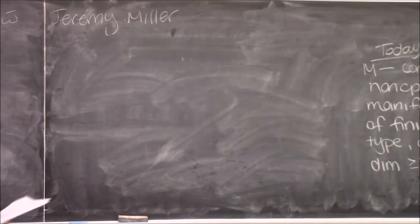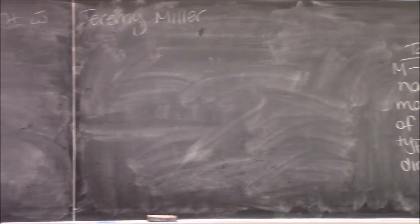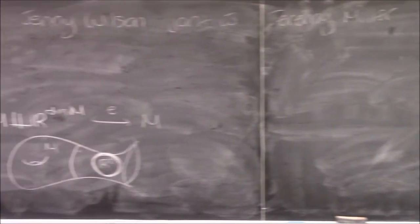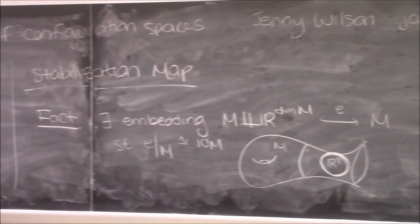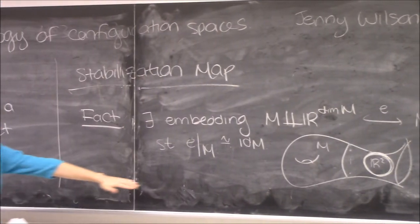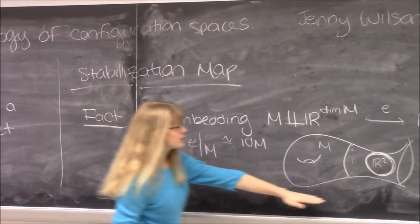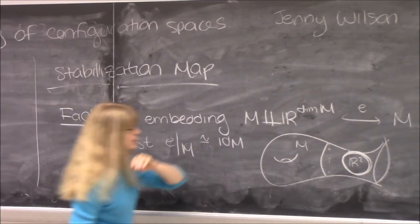So this is an embedding of R² into a little collar of the end of the manifold. And using this embedding, I will define some maps on these configuration spaces.